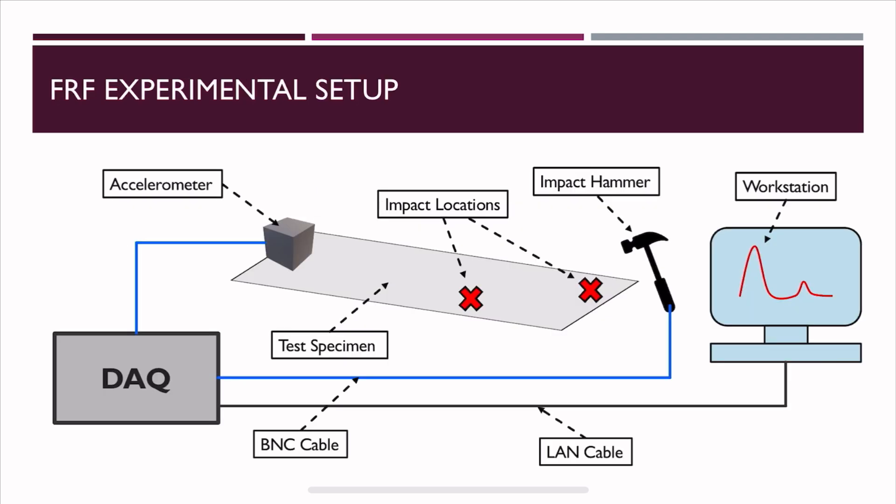For the experimental setup for FRF measurement, take a test specimen such as a rectangular plate. Connect the accelerometer on the point of interest, then connect it to the data acquisition system. Connect the impact hammer to the data acquisition system using BNC cables — these are all ICP sensors. Figure out the impact location, and connect the workstation to the data acquisition system with a LAN cable. You'll be hitting at different locations and measuring the response with that accelerometer.